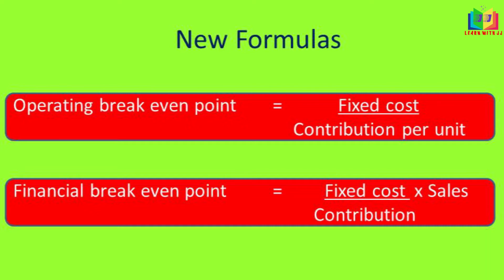Operating breakeven point is nothing but your fixed cost divided by contribution per unit. And the financial breakeven point is equal to fixed cost divided by contribution into sales. From this formula, it is clear that operating breakeven point is the breakeven point in units, and the financial breakeven point is the breakeven point in value, that is in rupees.